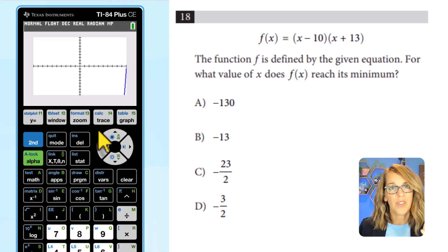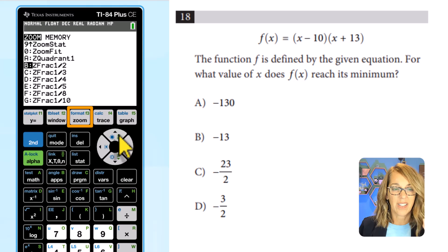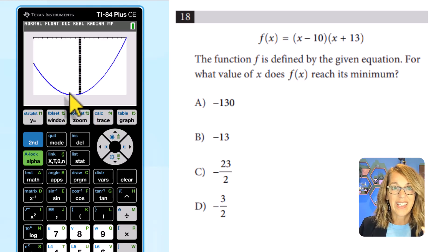The first thing that I want to do is to do a zoom fit so I can see the graph. I'm going to go zoom followed by zoom fit. It's not showing up here. Let's arrow up. Zoom fit is number zero. So I'm going to hit enter. And there I can see that minimum.